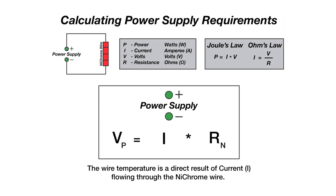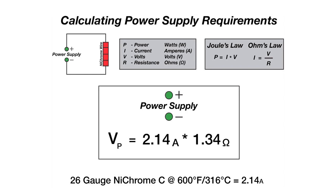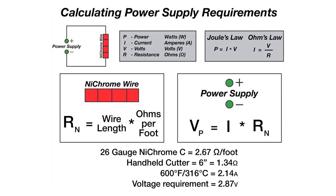Getting back to our equation, we will need to plug in the two known variables to calculate the required circuit voltage. Because the desired temperature is 600 degrees Fahrenheit, we will use the 2.14 amps, and from our previous calculations or measurements, we'll be plugging in the circuit resistance. With simple math, we've estimated the required power supply voltage to be 2.87 volts. Summarizing all the previous steps, we were able to determine that a 6 inch handheld cutter that uses 26 gauge nichrome wire has an estimated resistance of 1.34 ohms. With the desired temperature of 600 degrees Fahrenheit, 26 gauge nichrome wire requires 2.14 amps. In order to generate that level of current through that known resistance, we need to apply 2.87 volts to the nichrome wire circuit.